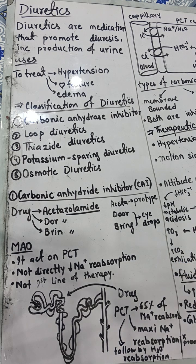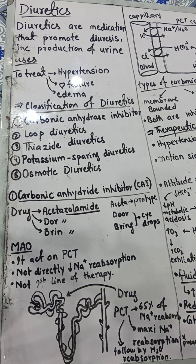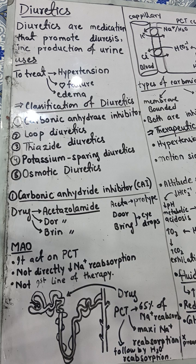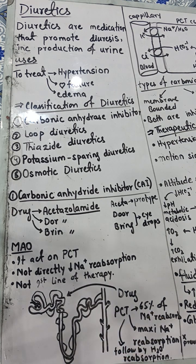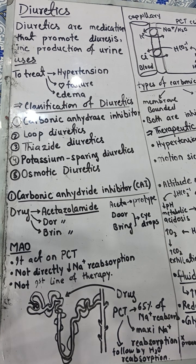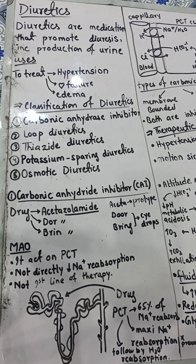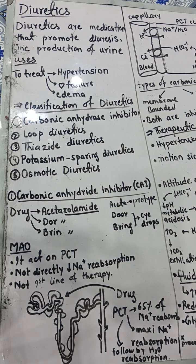CAI does not directly decrease sodium reabsorption. It uses a different mechanism to decrease sodium reabsorption, which in turn decreases blood pressure. An important point: it cannot be given as first-line therapy. First, due to its complex mechanism it can cause many complications. Second, it has a very short duration of action, making it unsuitable for lifelong use.